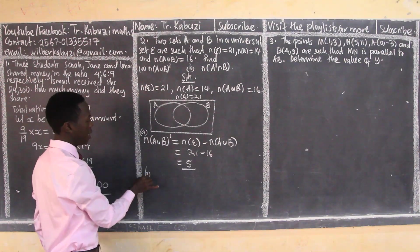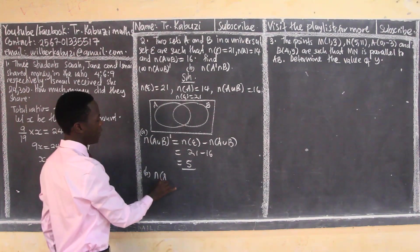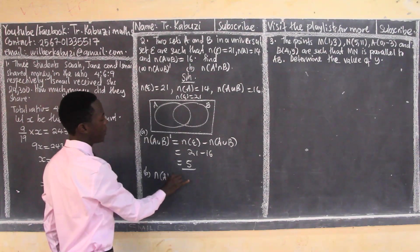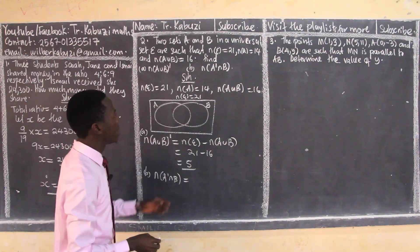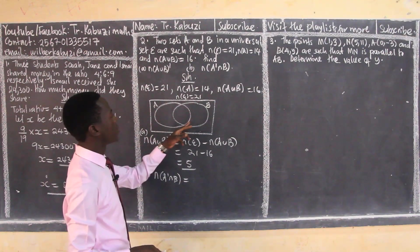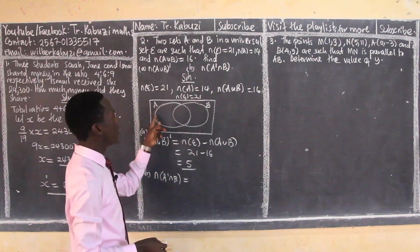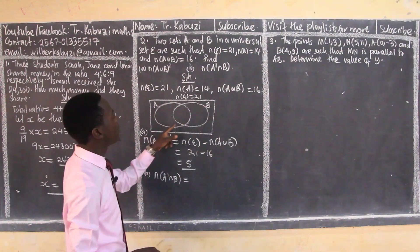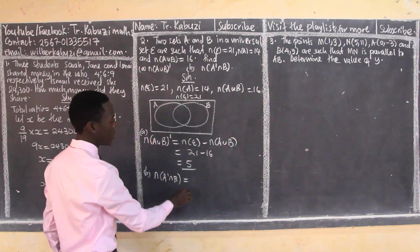Then part B, you want me to get number of A complement intersection B. Now A complement intersection B, we all know that this is going to be the space here. So what I'm going to do, I'm going to get the union then minus those members in A.